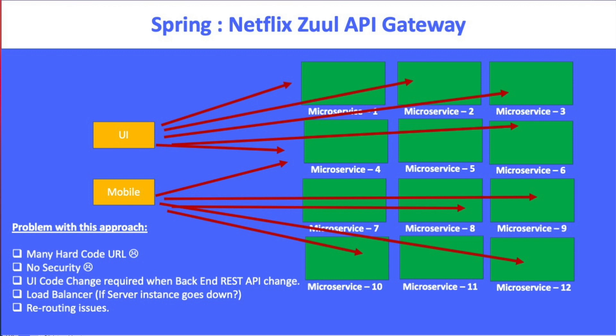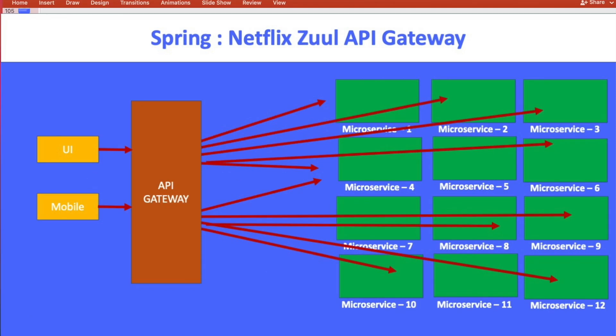The solution is the API gateway. How does it solve the problem? If you look at the previous screen, you were making one call per microservice from the UI - not even just one, if one microservice has 10 REST APIs, that's 10 calls. If you have 10 microservices with 10 REST APIs each, that's hundreds of calls from the UI and that many hardcoded entries. Now with the API gateway, you just make one call.